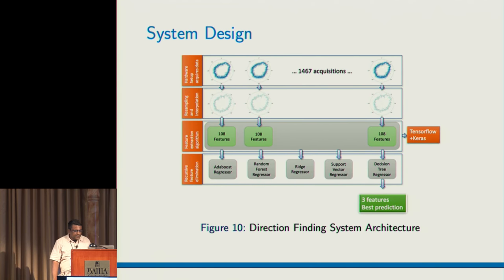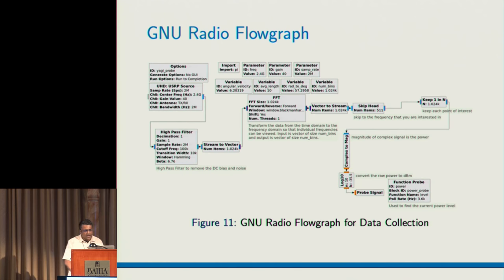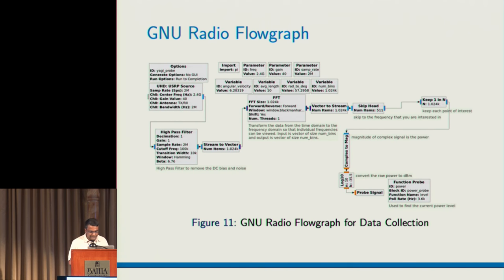This is the system design we used. We had the different data acquisitions, normalized them, fed them into feature extractors, and then used learning algorithms to output the directions. This is the GNU Radio flow graph for obtaining the data on the receiver side. It's very simple and straightforward — we just used what was already available without doing anything new.